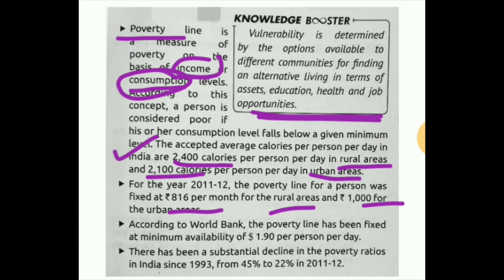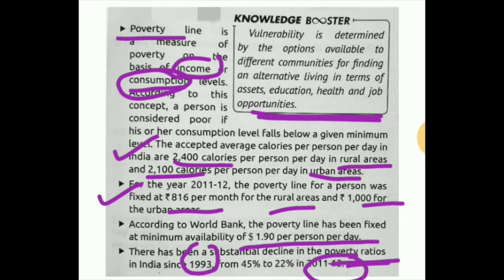The income method uses the World Bank's poverty line, which is fixed at a minimum of $1.90 per person per day. If your income falls below this, you are considered poor. There has been a substantial decline in the poverty ratio — from 45 percent in 1993 to 22 percent in 2011-12.